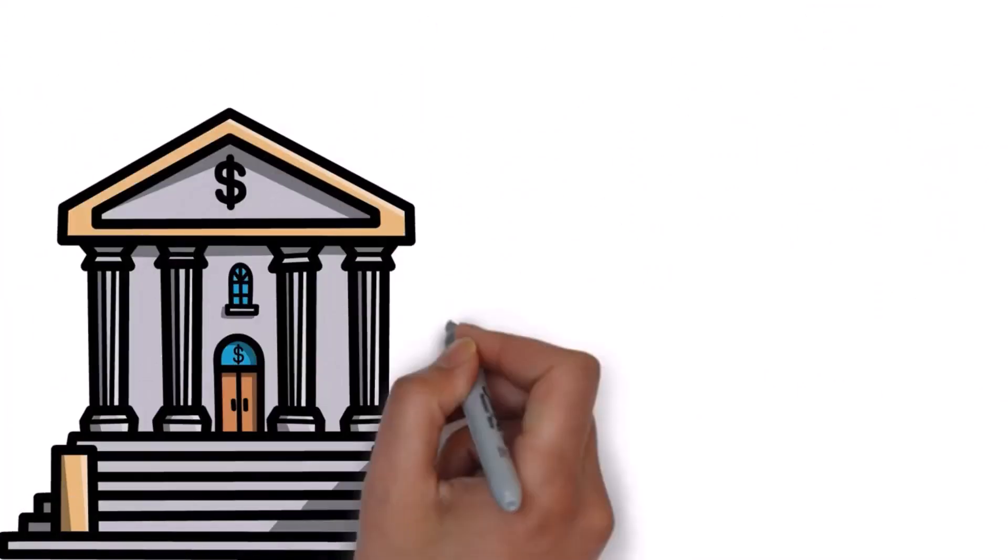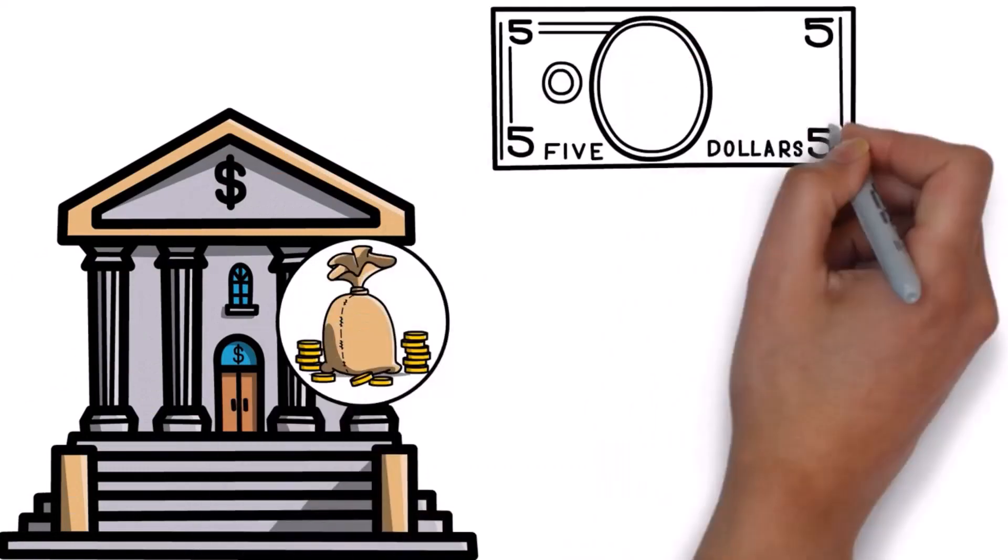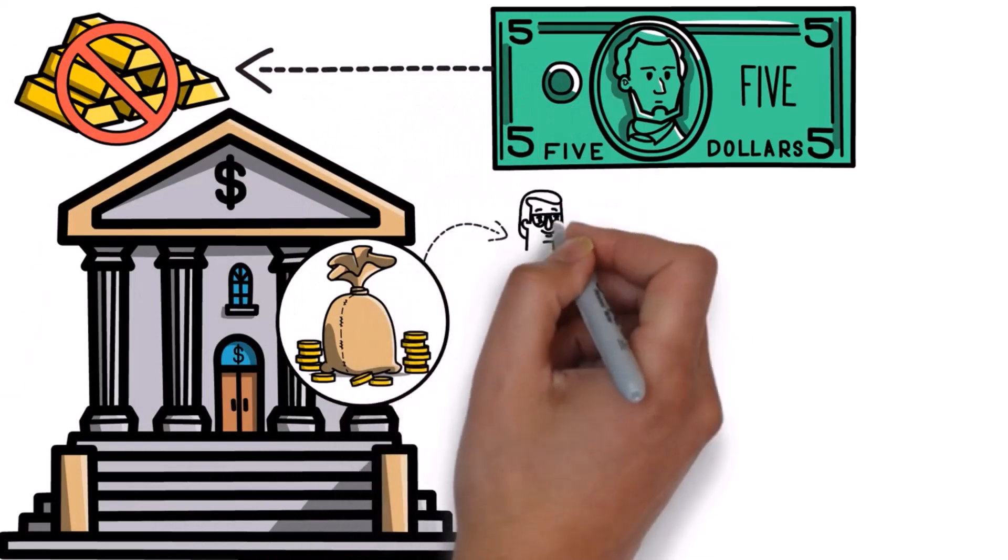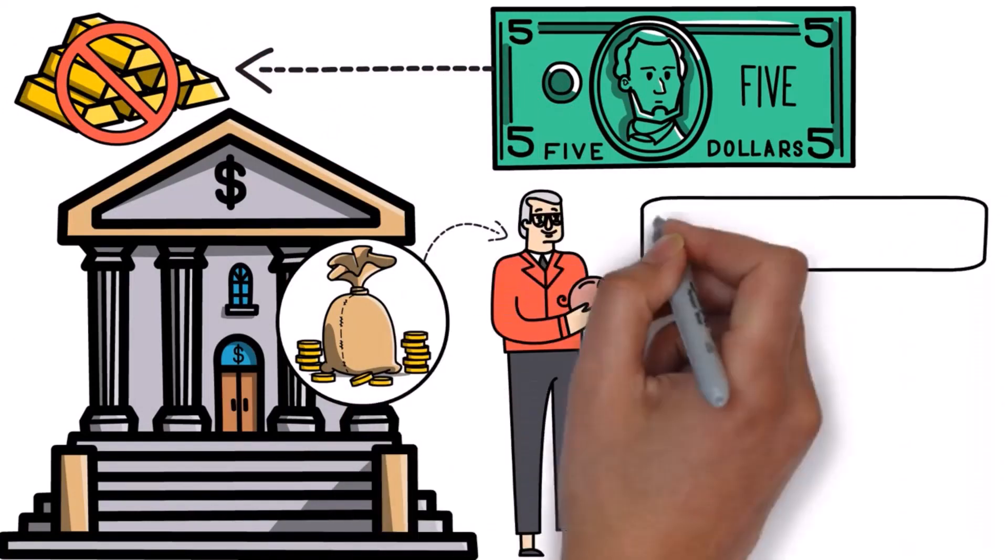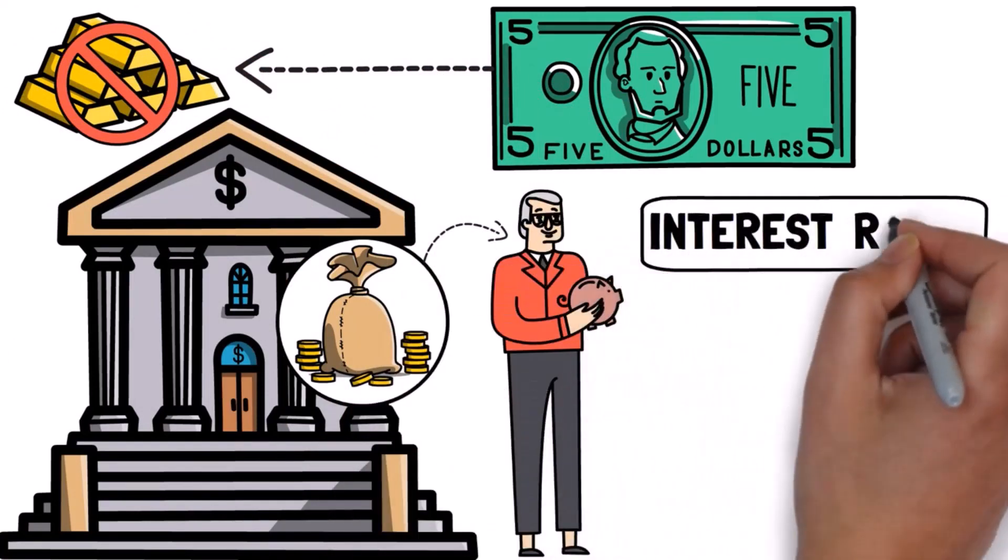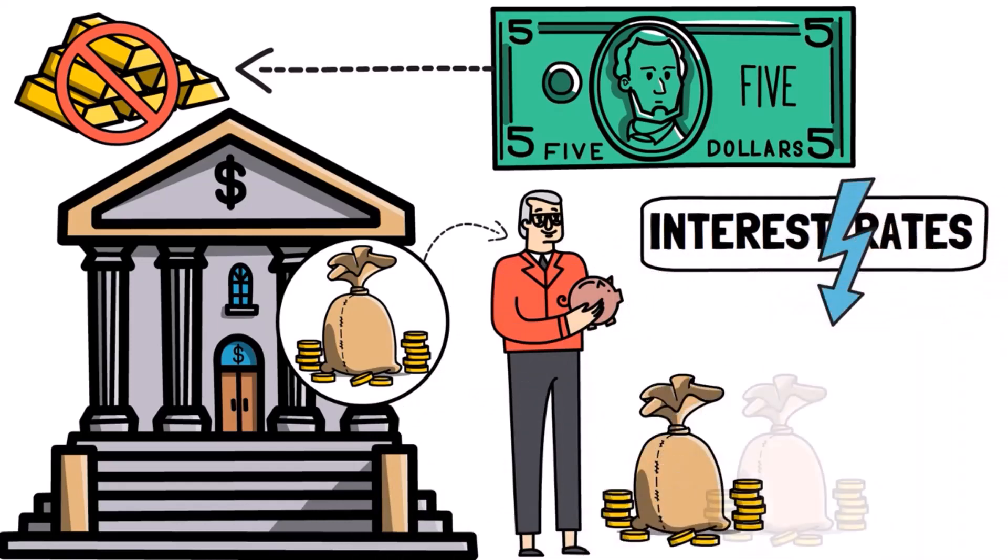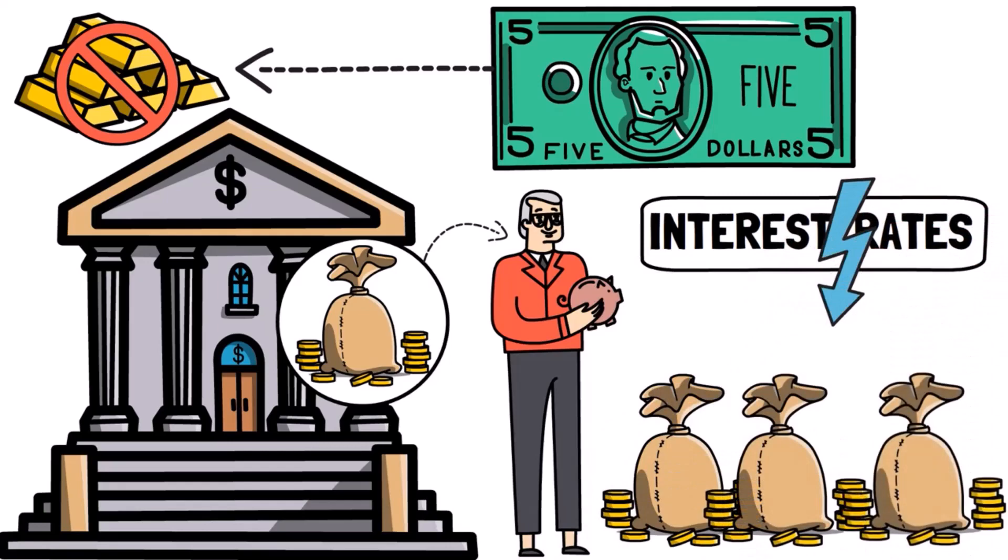But when the bank started offering loans, things changed. They began creating paper money out of thin air, not backed by the gold they held. This meant they could lend money to people without giving up any of their own gold. They could also offer lower interest rates than others in town. So people started borrowing more because the interest rates were attractive.